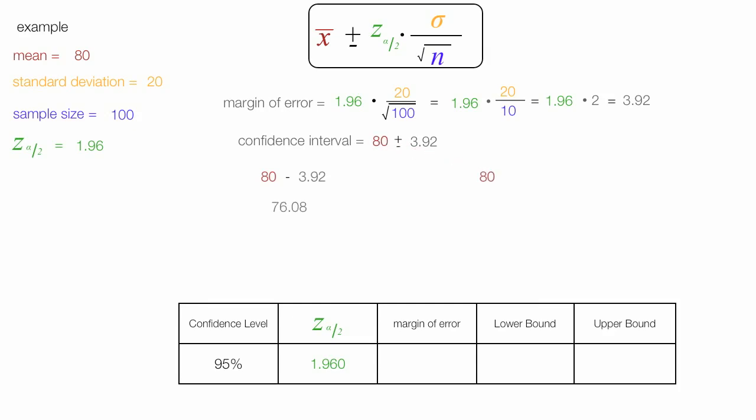Now I'm going to calculate the upper bound, which is 80 plus 3.92, and this equates to 83.92.